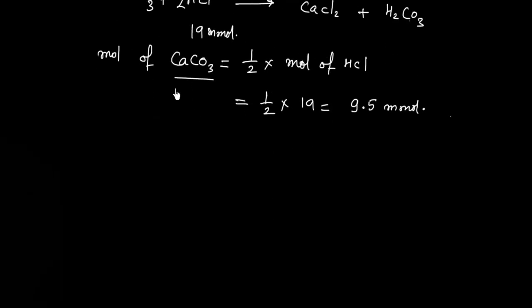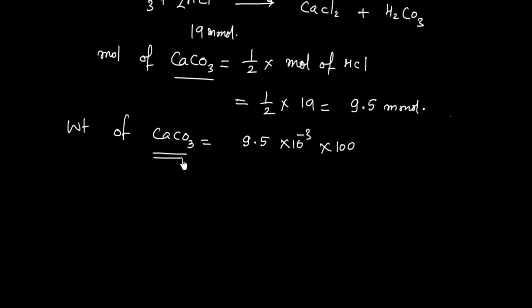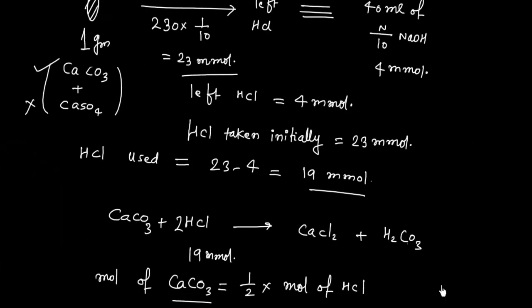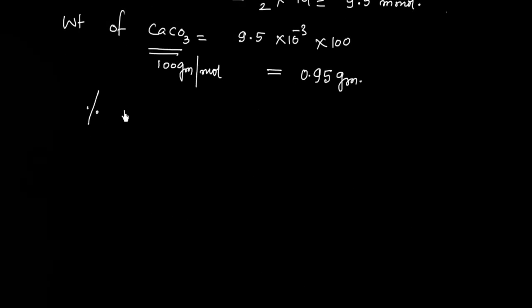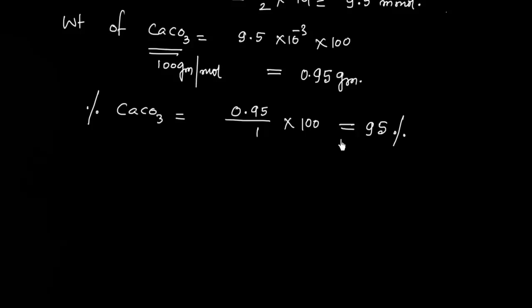Once I know the moles of CaCO3, we can calculate the mass. Mass of CaCO3 = 9.5 × 10⁻³ × 100 = 0.95 grams, since the molecular mass of CaCO3 is 100 g/mol. The initial sample was 1 gram, so percentage of CaCO3 = (0.95 / 1) × 100 = 95%.